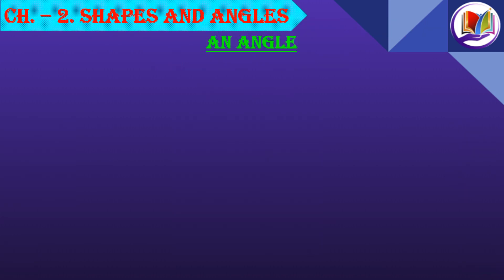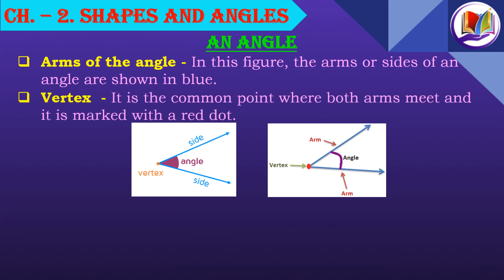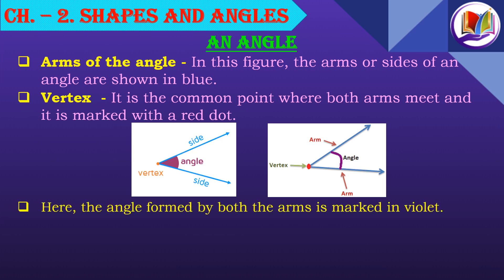In the previous video, we had learnt about formation of an angle. Let's recall a little bit about it. The arms or sides of an angle are shown in blue color. The vertex is a common point where both arms meet, marked with a red dot. The angle formed by both the arms is marked in violet. This is how an angle is formed.